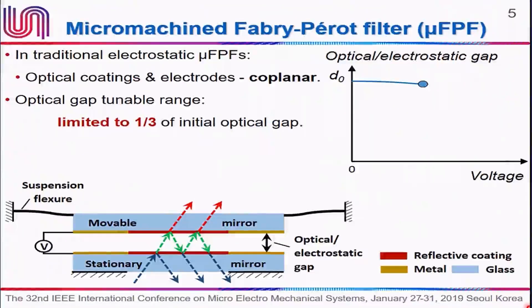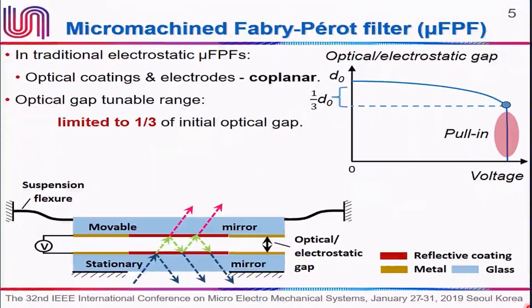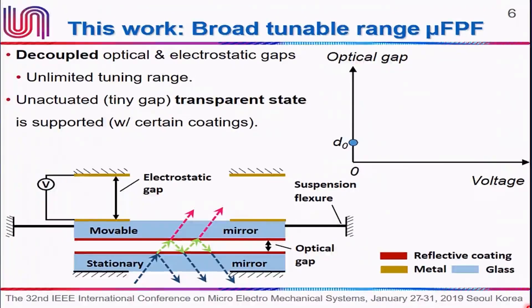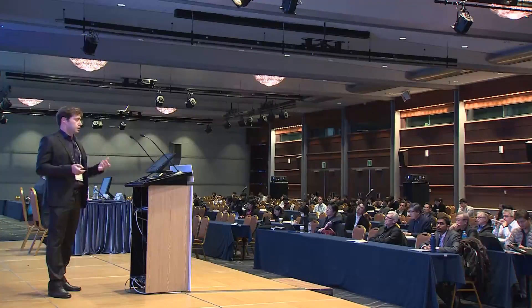This is due to the well-known pull-in phenomena. When we have a movable mirror and a stationary mirror and we apply electrostatic actuation, the optical gap decreases. But immediately after a reduction of about a third of the initial optical gap, we encounter this pull-in phenomena, which inherently limits the tunable range. Because hyperspectral imaging requires a very broad tunable range, we bypass this pull-in phenomena by simply decoupling the optical and electrostatic gaps.